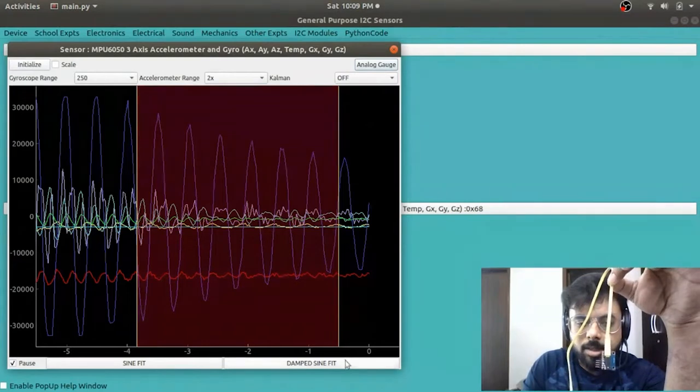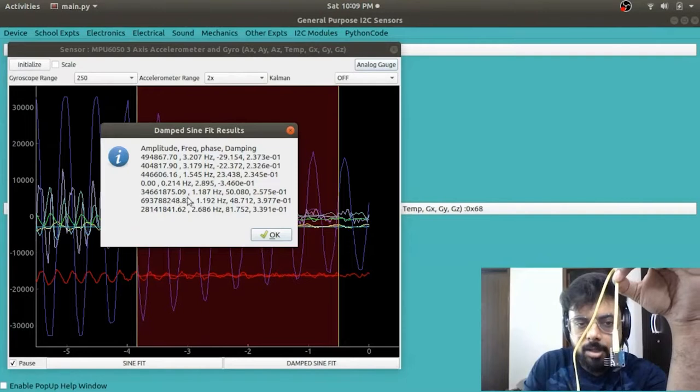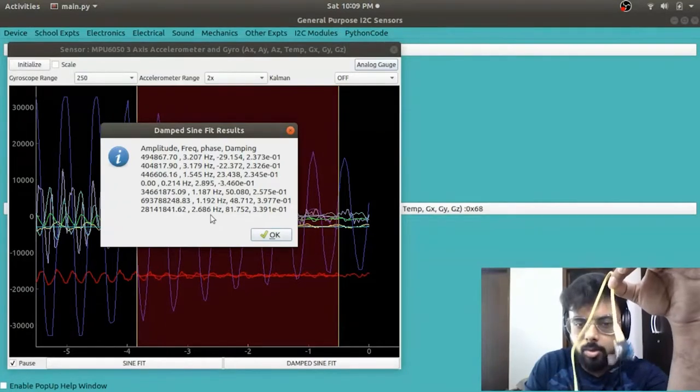And use SciPy's regression capabilities to apply a damped sine fit. Now you can see here that the frequency of oscillations is about 2.686 hertz, which makes sense, about twice a second.